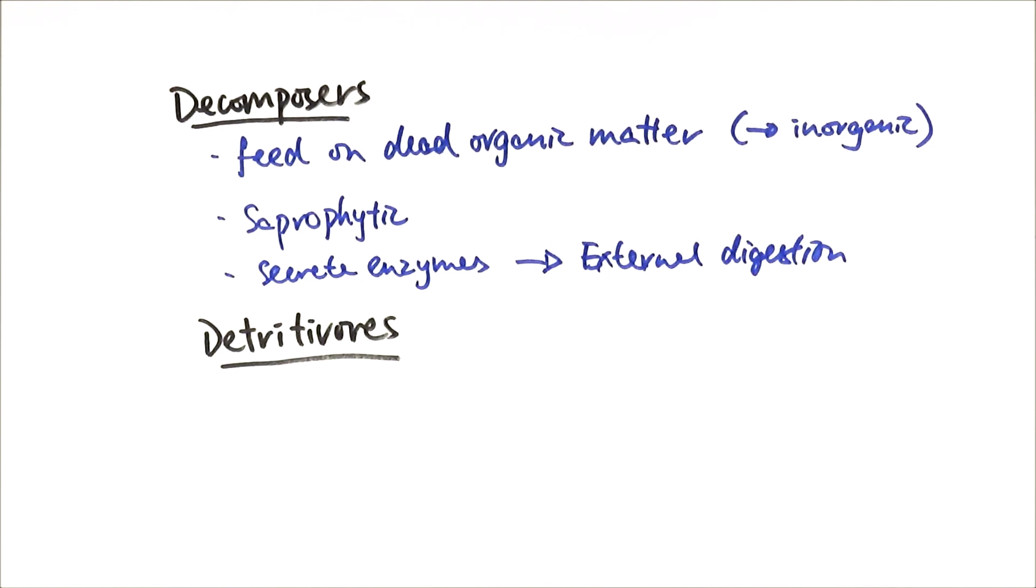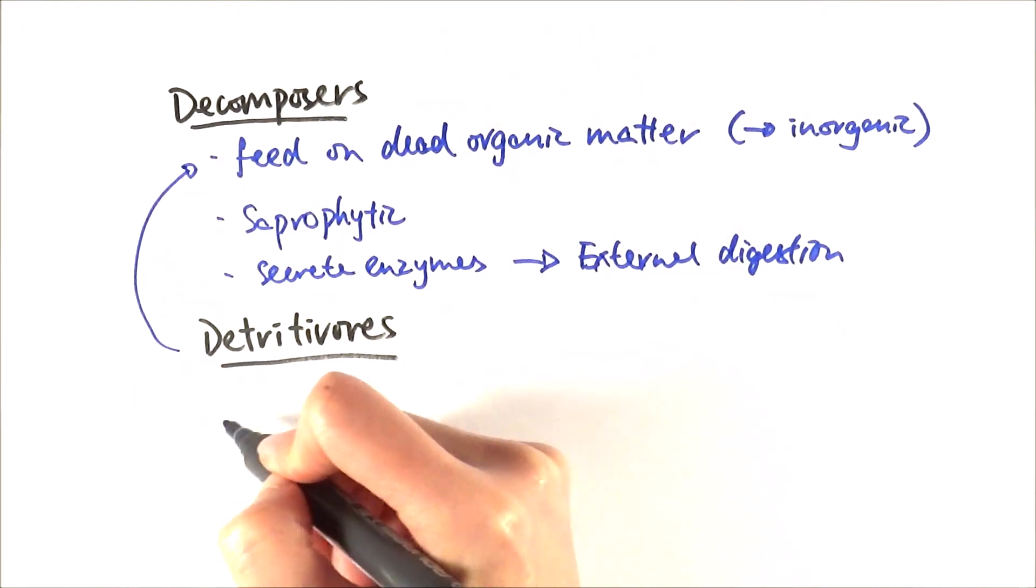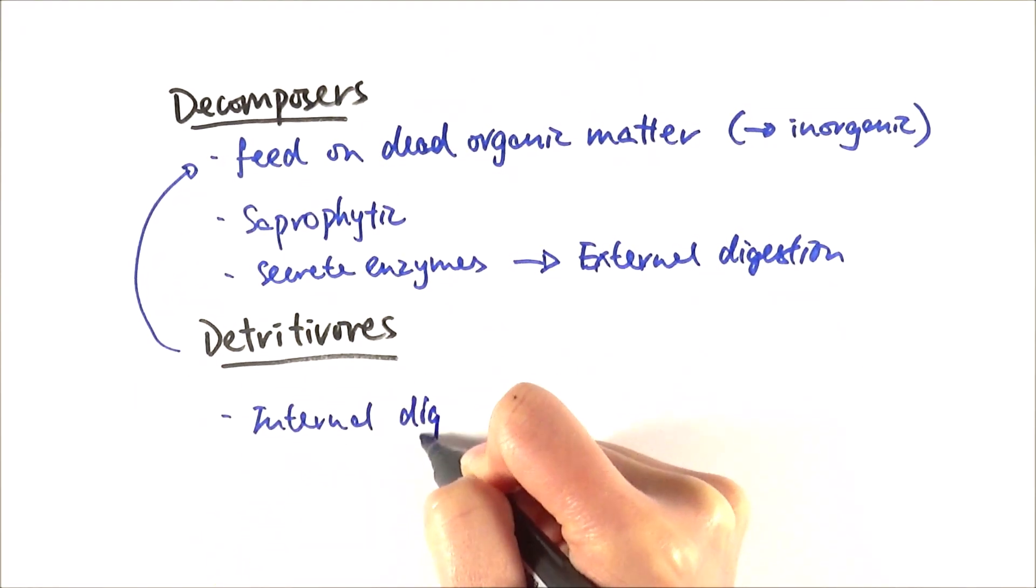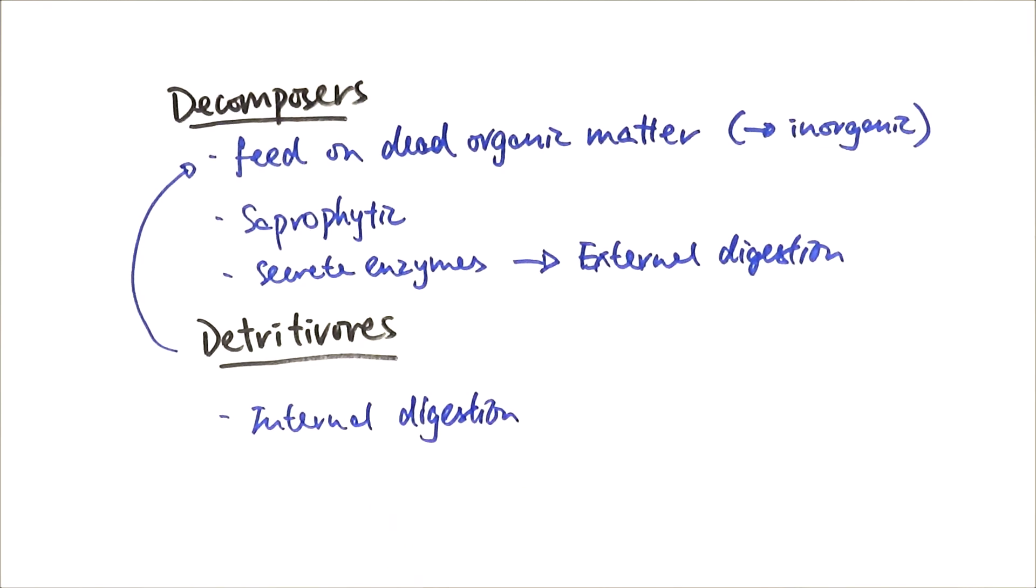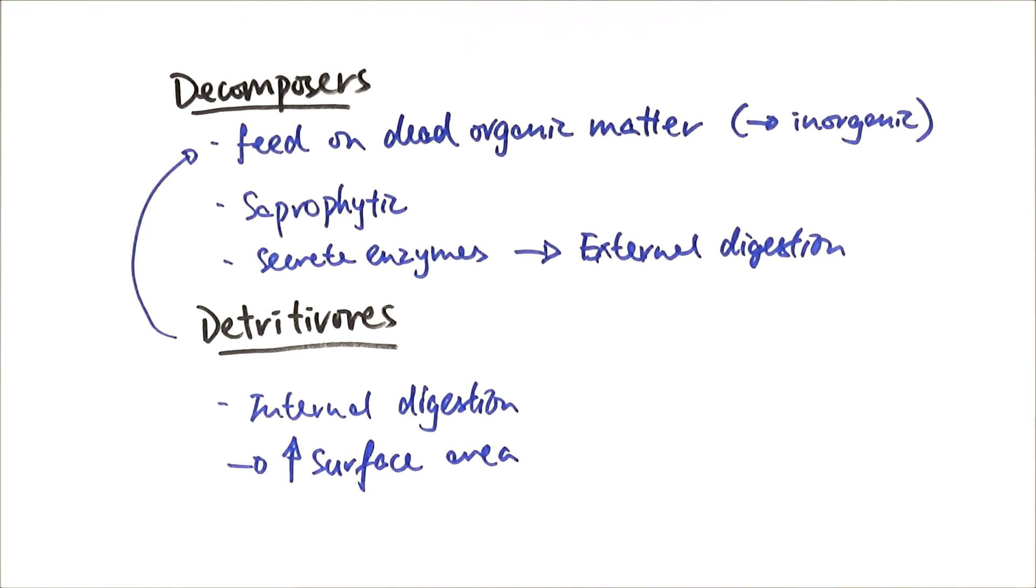Detritivores, on the other hand, still feed on dead organic matter, so they work in the same way. However, they do internal digestion. What that means is they actually eat the food into their body and by doing so, they increase the surface area of the food they're digesting.